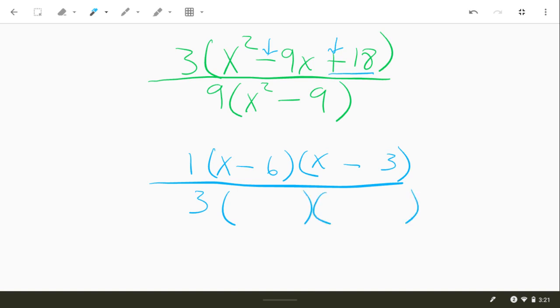And then x squared minus 9, this piece, is going to factor using difference of squares. So x times x gives us x squared. 3 times 3 gives us 9. 1 plus, 1 minus.